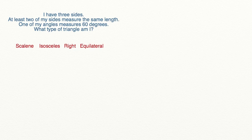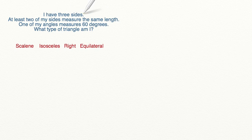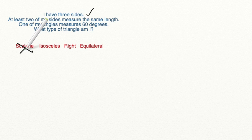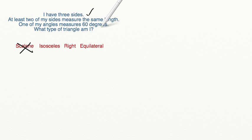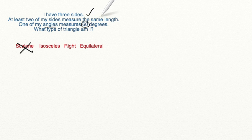Let's try a riddle together. I have three sides. At least two of my sides measure the same length. One of my angles measures 60 degrees. What type of triangle am I? Let's start by crossing out ones we know we cannot have. At least two sides the same length crosses out a scalene triangle, because a scalene triangle has to have all three sides of different lengths. If you have two sides that are the same length, you also have two angles that are the same. And if two of your angles are 60 degrees, that means your third one has to be 60 degrees too, to create an equilateral triangle.